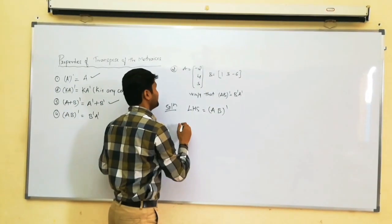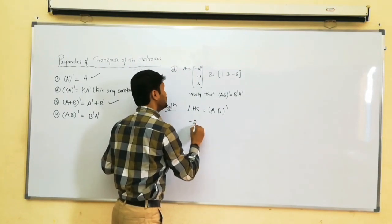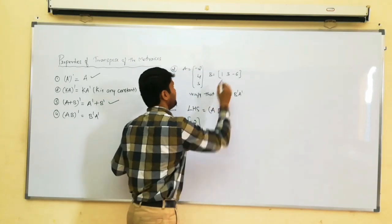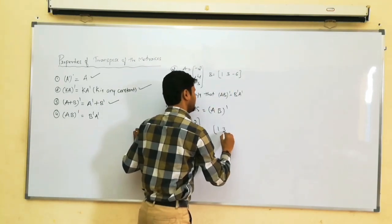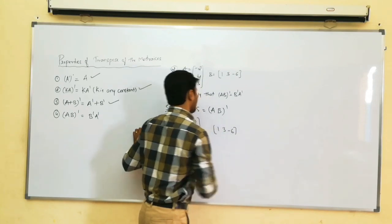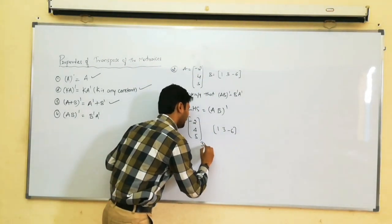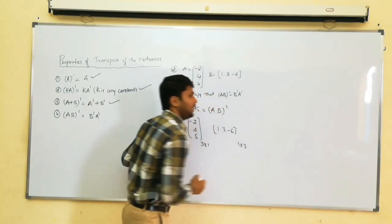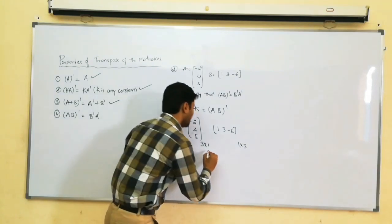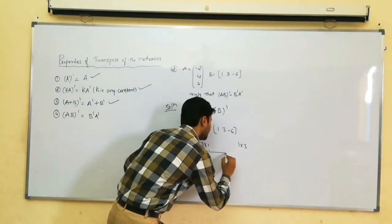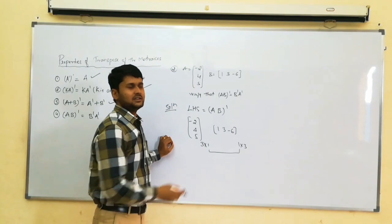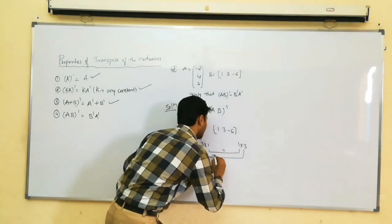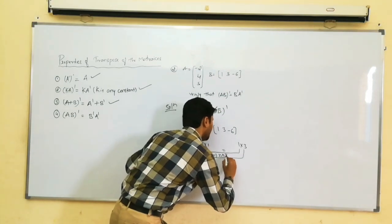Matrix A is: minus 2, 4, 5 — a 3 by 1 column matrix. Matrix B is: 1, 3, minus 6 — a 1 by 3 row matrix. When matrix multiplication is possible, the number of columns in the first matrix must equal the number of rows in the second matrix. Both are equal here, so after multiplying we will get a 3 by 3 matrix.